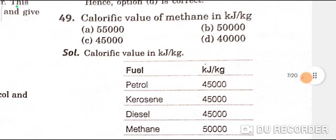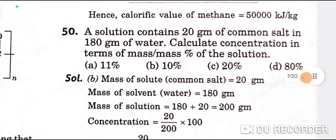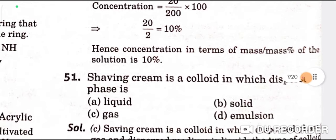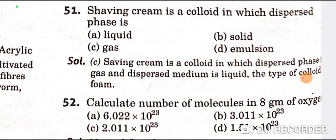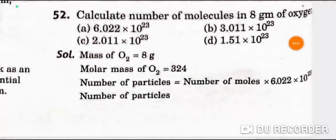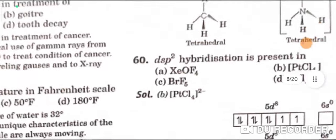The calorific value of methane in kilojoules per kg is 50,000 — B is the correct option. A solution contains 20 grams of common salt in 180 grams of water; the mass per mass percentage is 10% — B is the correct option. Shaving cream is a colloid in which the dispersed phase is gas — C is the correct option. The number of molecules in 8 grams of oxygen is 1.51 × 10²³ — D is the correct option.